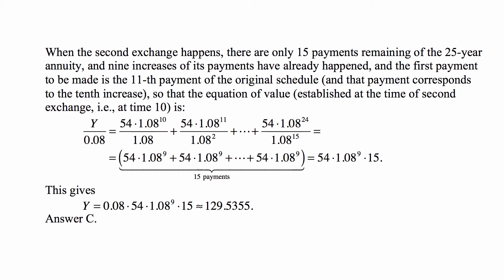The perpetuity has value Y/0.08, which must equal the present value of the remaining annuity payments: 54·1.08¹⁰/1.08 + 54·1.08¹¹/1.08² + ... + 54·1.08²⁴/1.08¹⁵. Again, when we cancel the powers of 1.08,